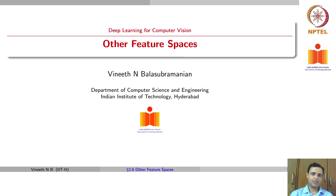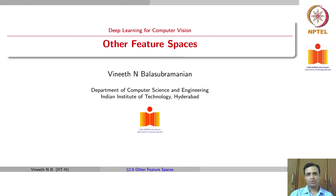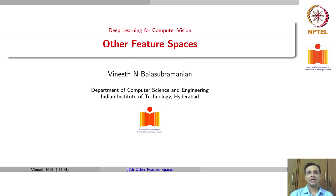We started this week by talking about edges, then we went from edges to blobs to corners and talked about different varieties of corner detectors, including an important corner detector called SIFT. We talked about the feature descriptor of how you would describe your corner as a vector, and last lecture we also talked about image segmentation. Now, we are going to talk about other kinds of feature spaces that people worked on in computer vision before deep learning came into the picture. That is going to be the focus of this lecture.